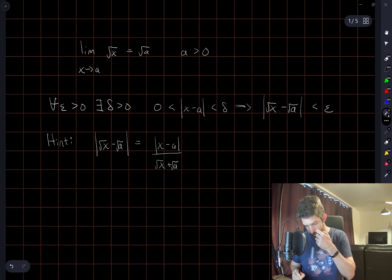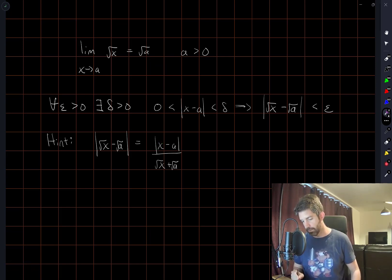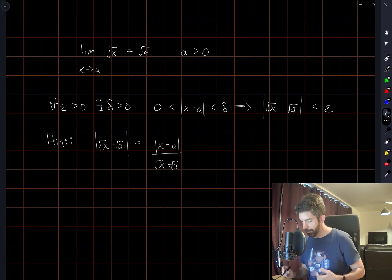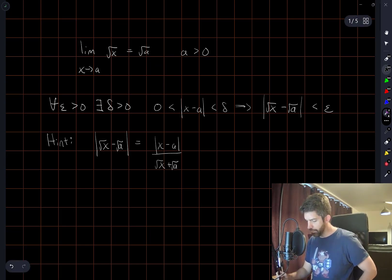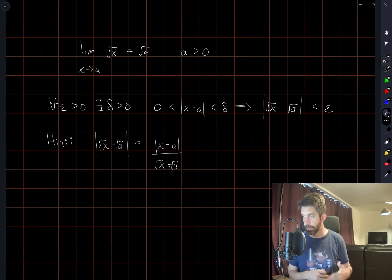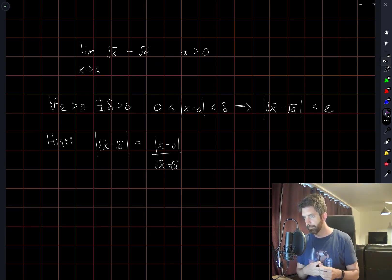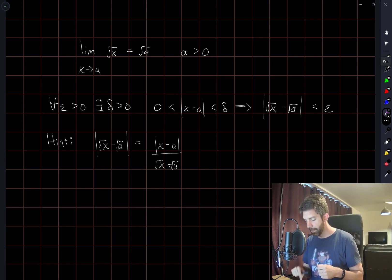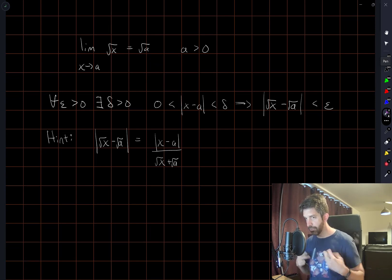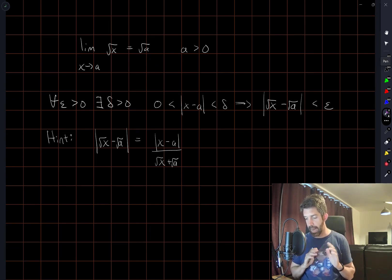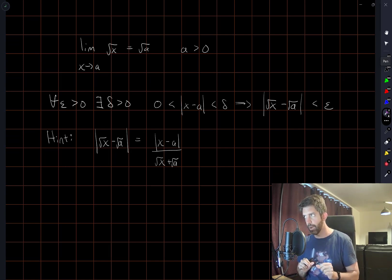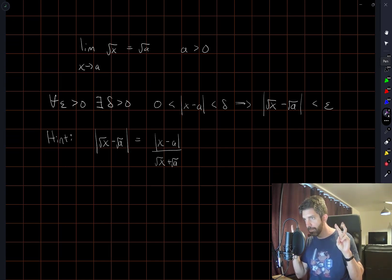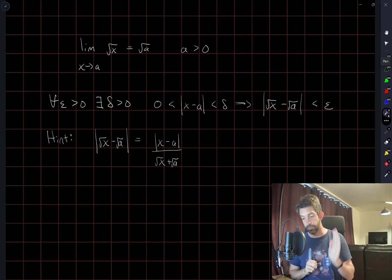You can see that this hint is correct by thinking of x minus a as a difference of squares, where x is equal to the square root of x squared, and a is equal to the square root of a squared. In terms of choosing the appropriate delta, this function is least well-behaved near a equals zero — that's where this function is farthest from being continuous. It has an infinite slope there.